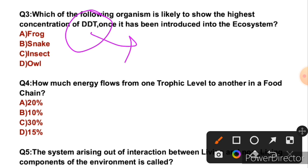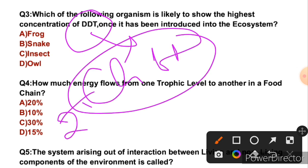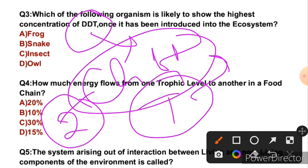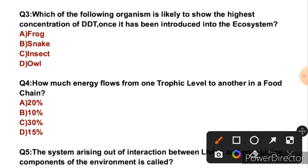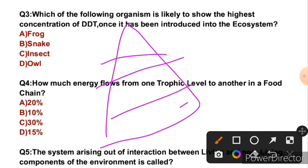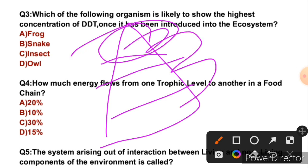DDT's full form is dichlorodiphenyltrichloroethylene. This is a non-water-soluble chlorinated hydrocarbon, which was used in World War 2 to control disease. It is non-biodegradable, so it is not decomposed. It gets accumulated at higher trophic levels — this is called biomagnification. The concentration of DDT increases at higher trophic levels.